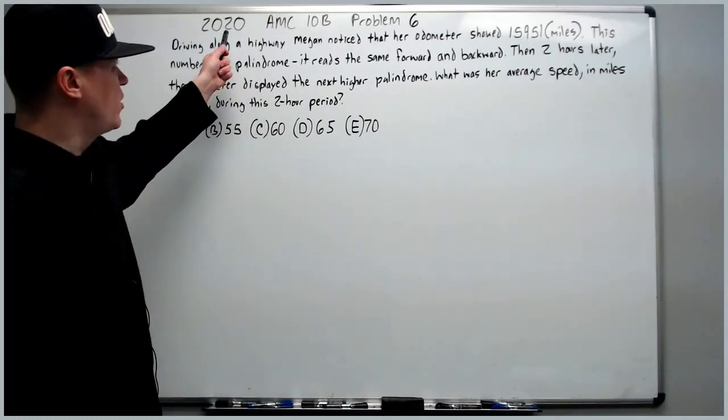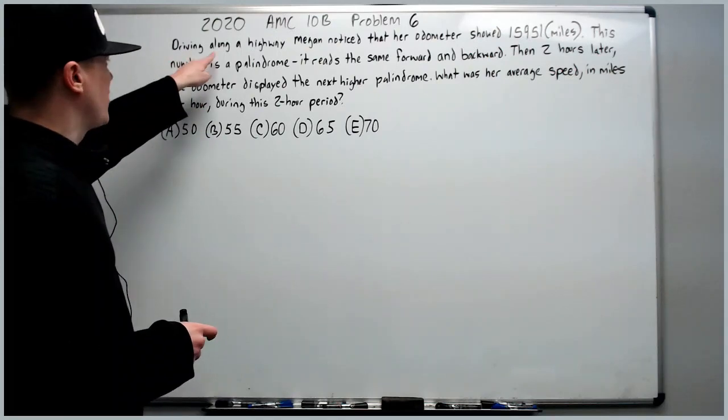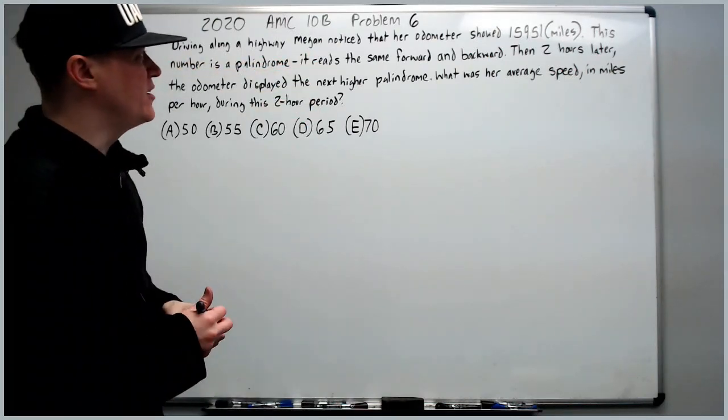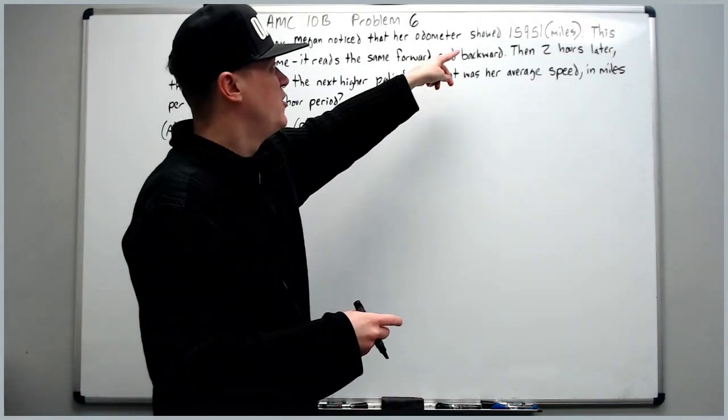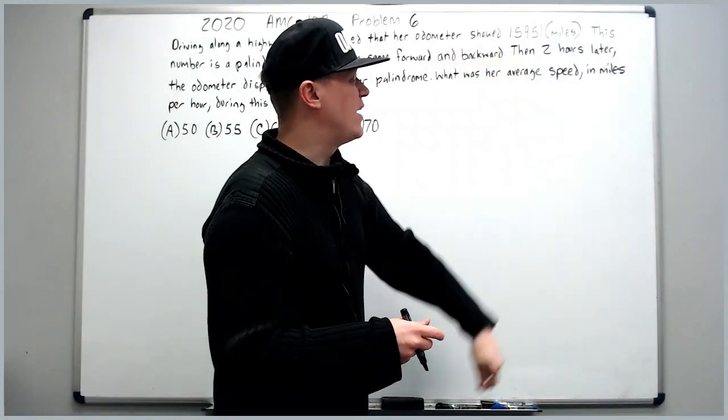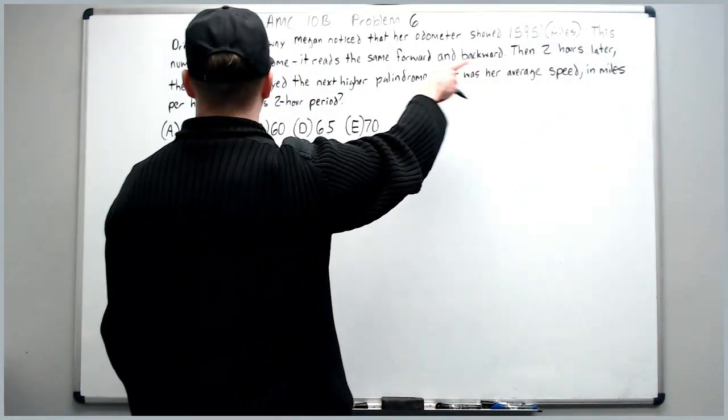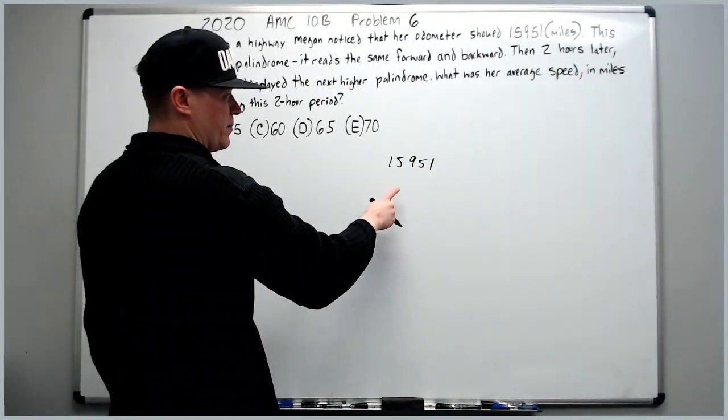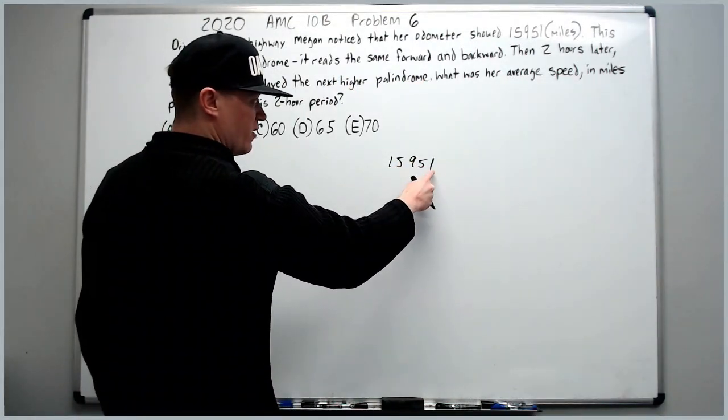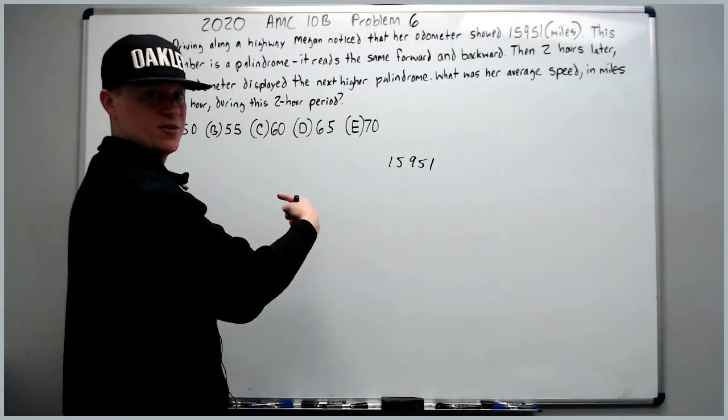Alright, in this video we'll do the 2020 10B problem number 6. Driving along a highway, Megan noticed that her odometer showed 15,951 miles. This number is a palindrome - it reads the same forward and backward. In other words, 15,951 is the same number read the other direction.